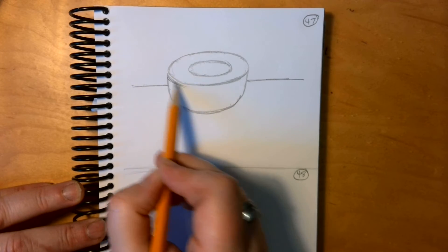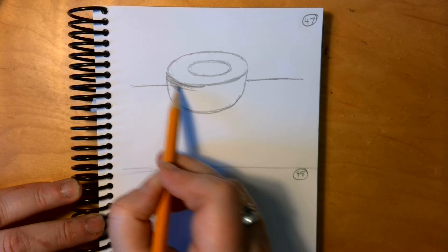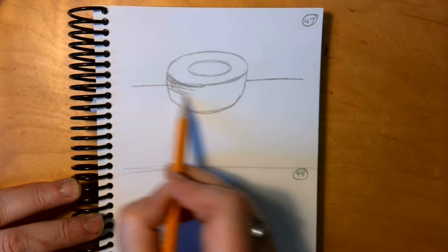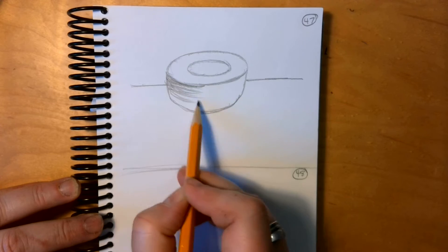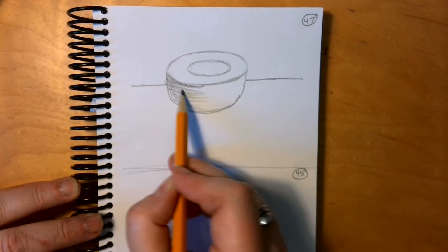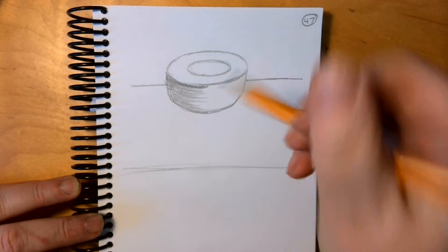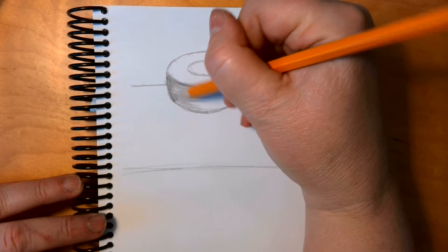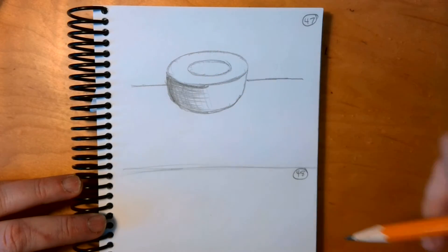We're going to shade here. I'm shading to make this look curved and rounded. Darker back here, fading as you come around.